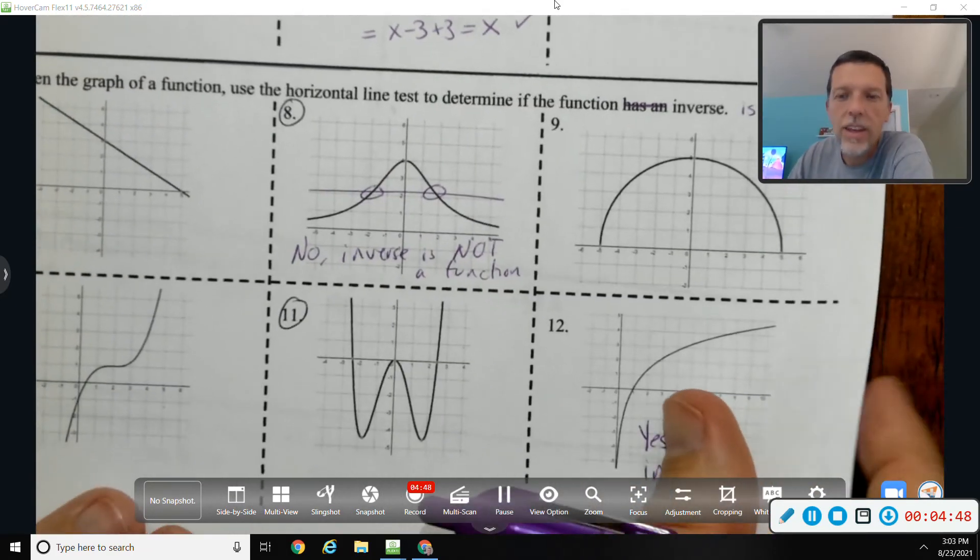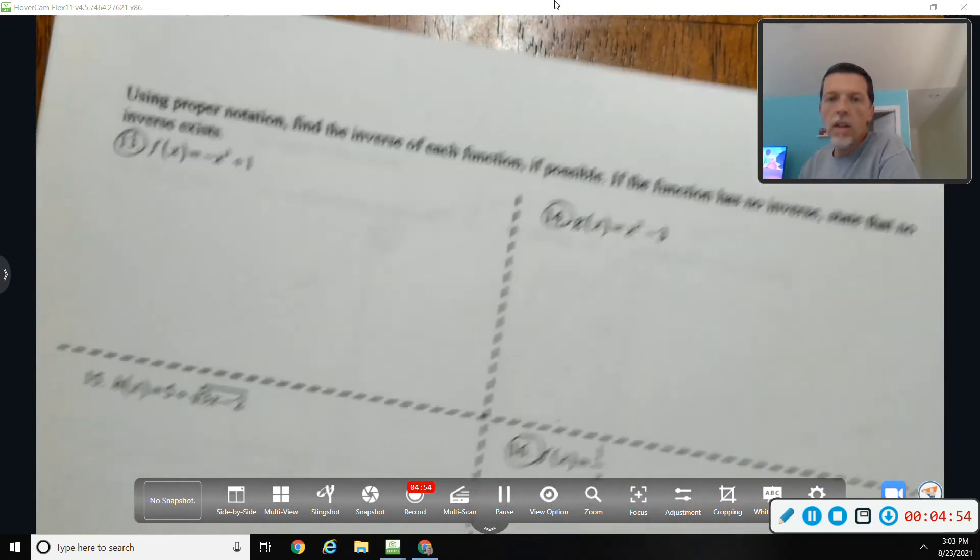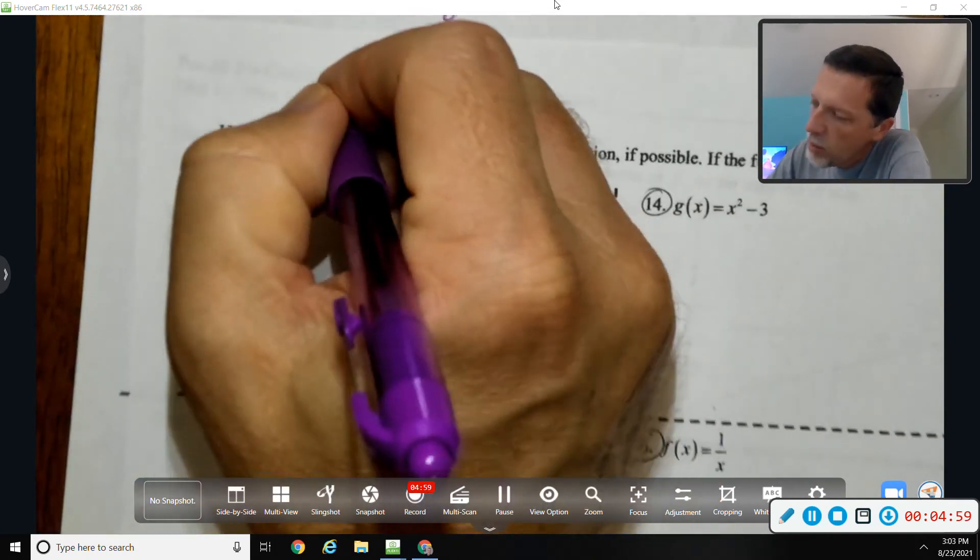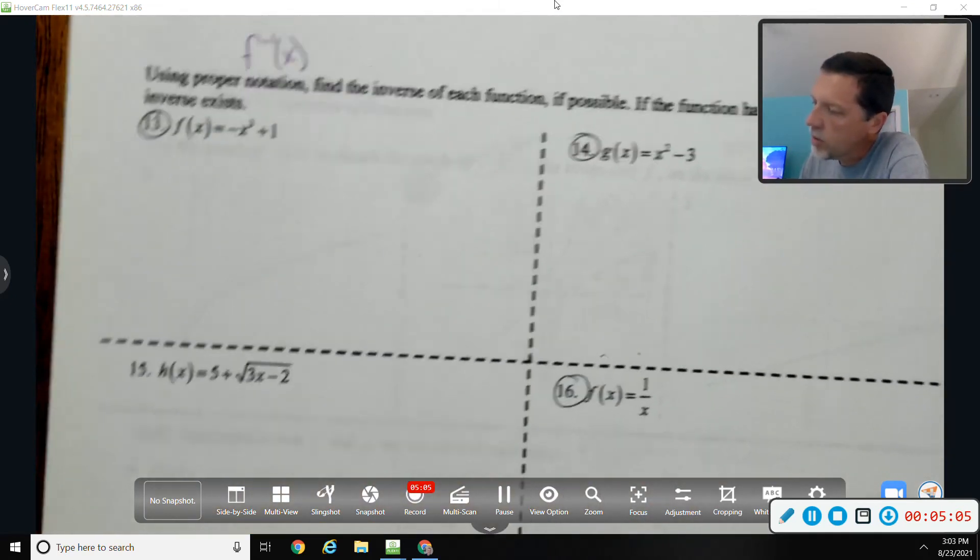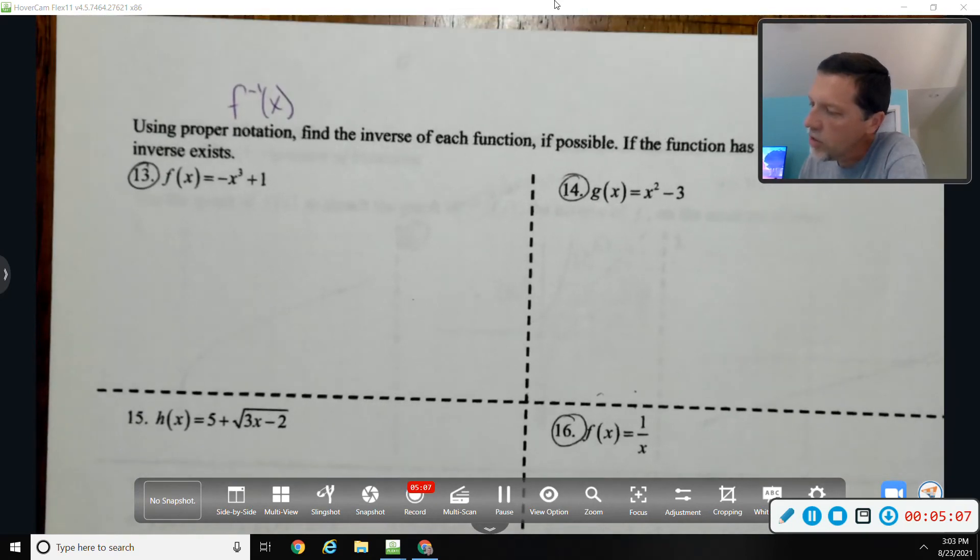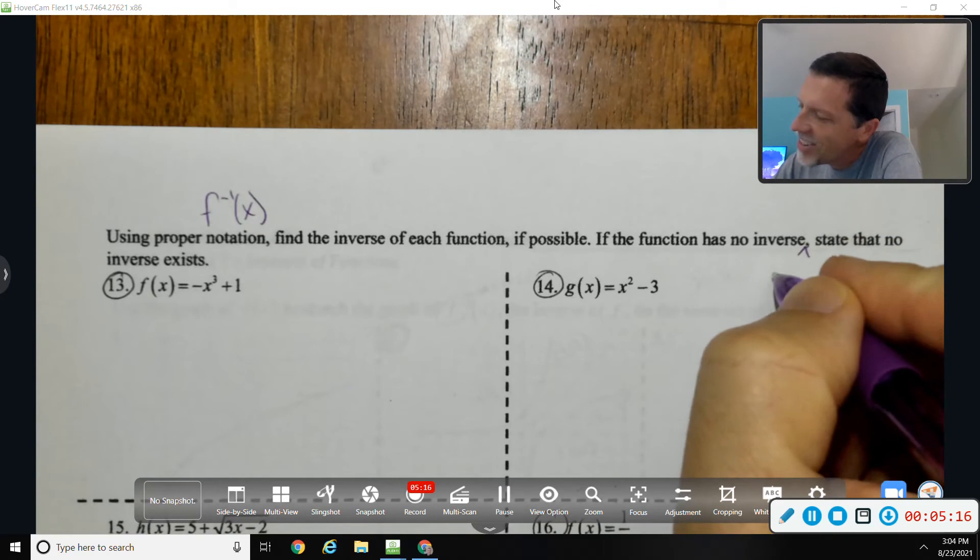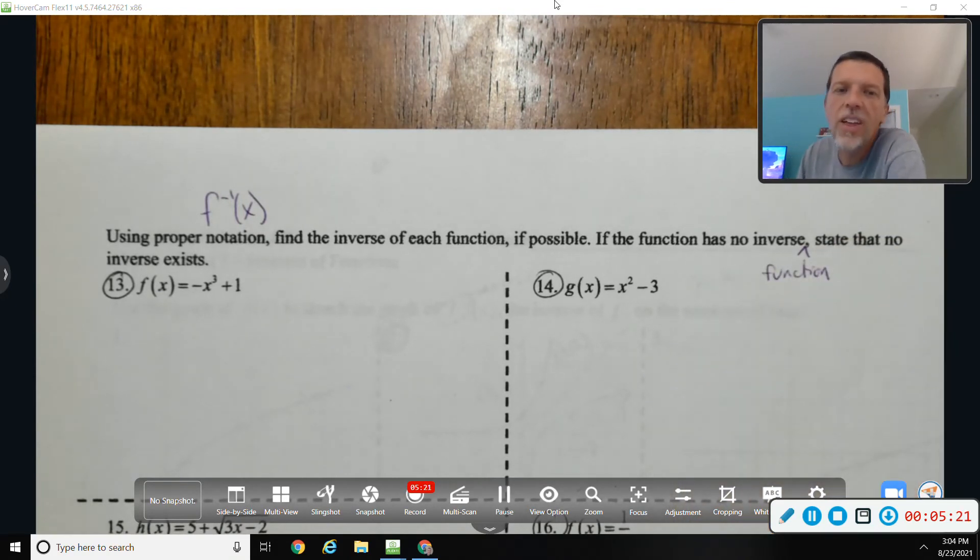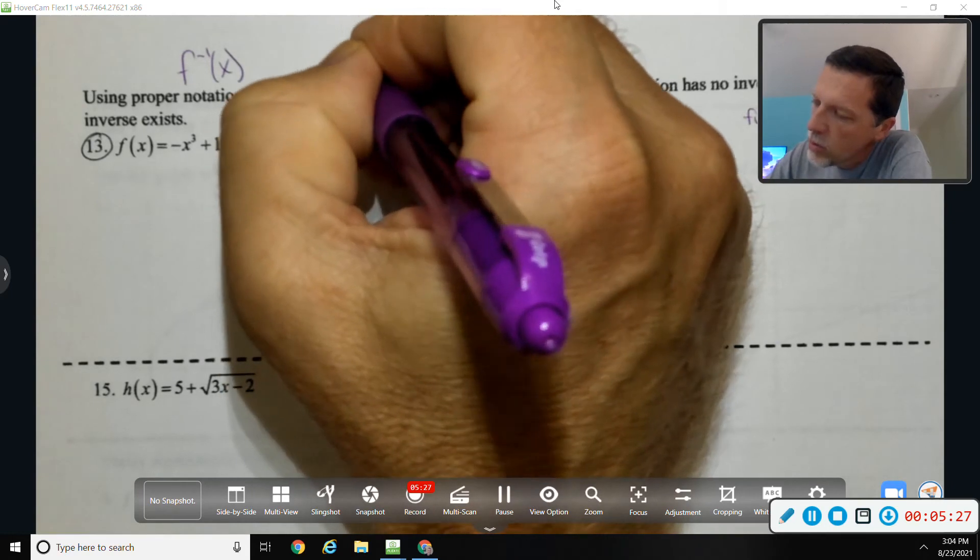Horizontal line test—just making sure you understand what it's telling you. This next section: using proper notation (that means the inverse notation), find the inverse if possible. If the function has no inverse function, state that no inverse exists. Again, the language is a little bit tricky here. So they all have an inverse; it's just whether the inverse is a function or not.